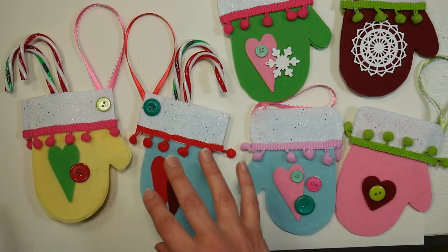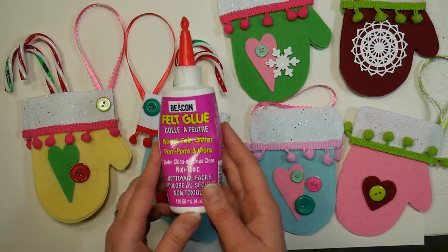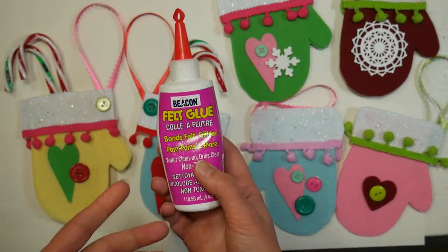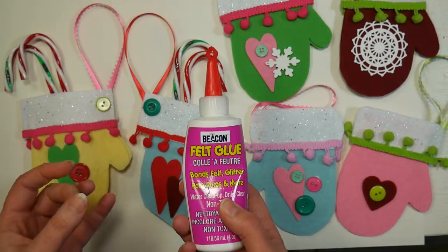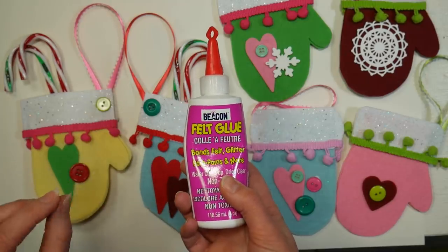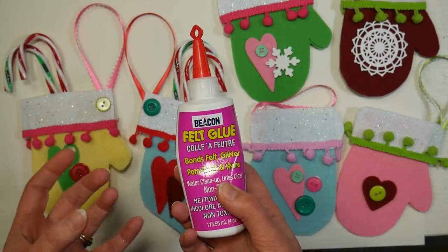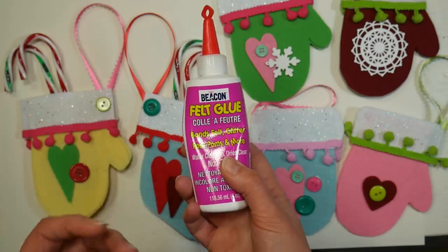So you can use hot glue for this, but we're actually going to use felt glue by Beacon. You could also use a fabric glue, something thick though, because felt can be tricky if you use just a regular school glue. That glue's so thin it wants to seep into the fibers and then it doesn't grab, so it doesn't hold your pieces together.